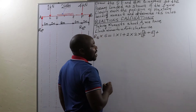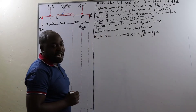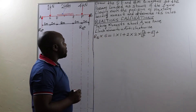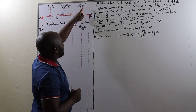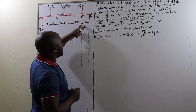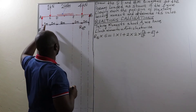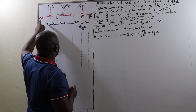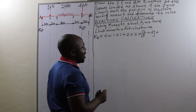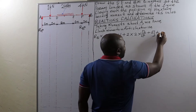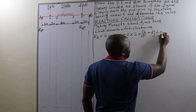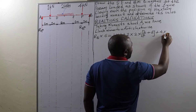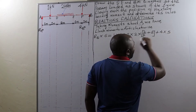Finally, we are going to add another clockwise moment of 4 kilonewtons times a distance of 5 meters from F all the way to A, which is going to give us 4 times 5.